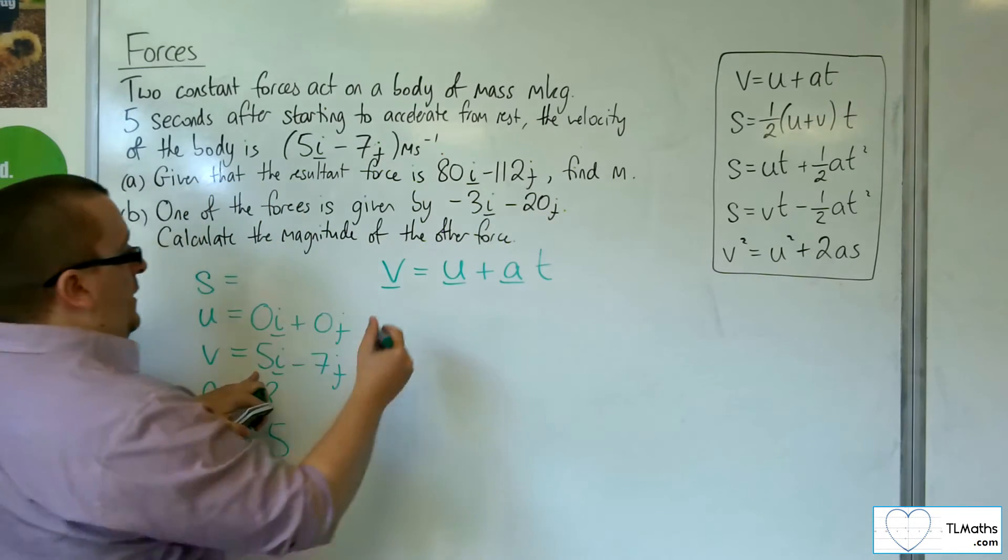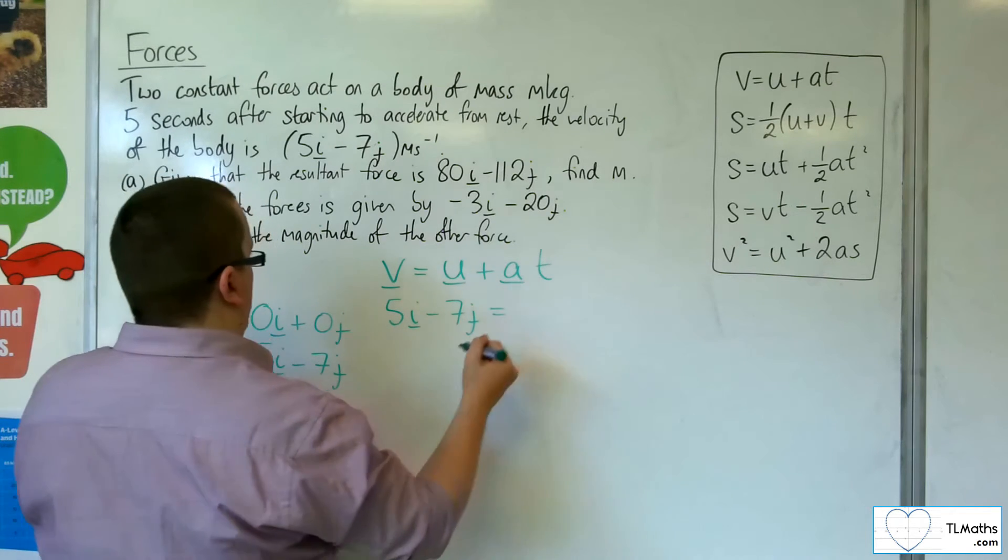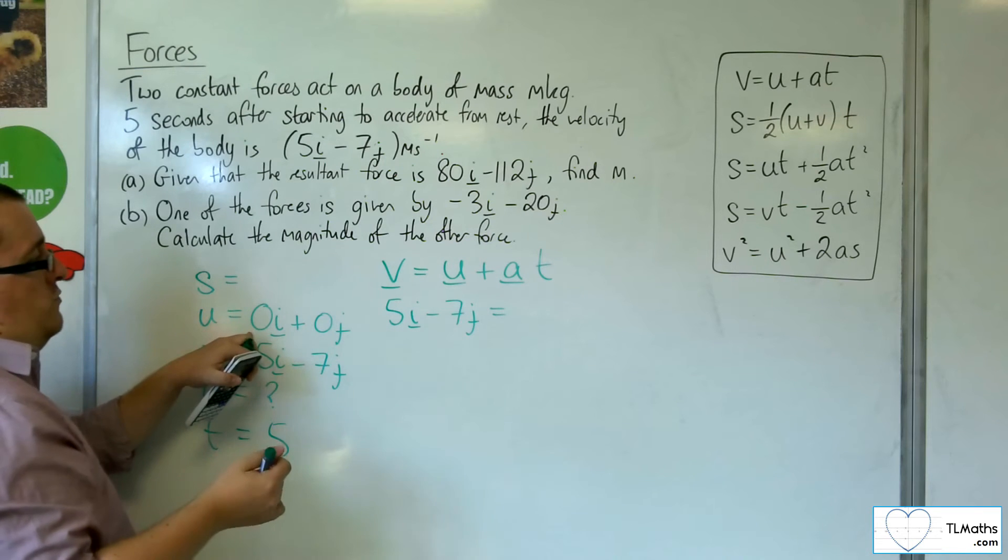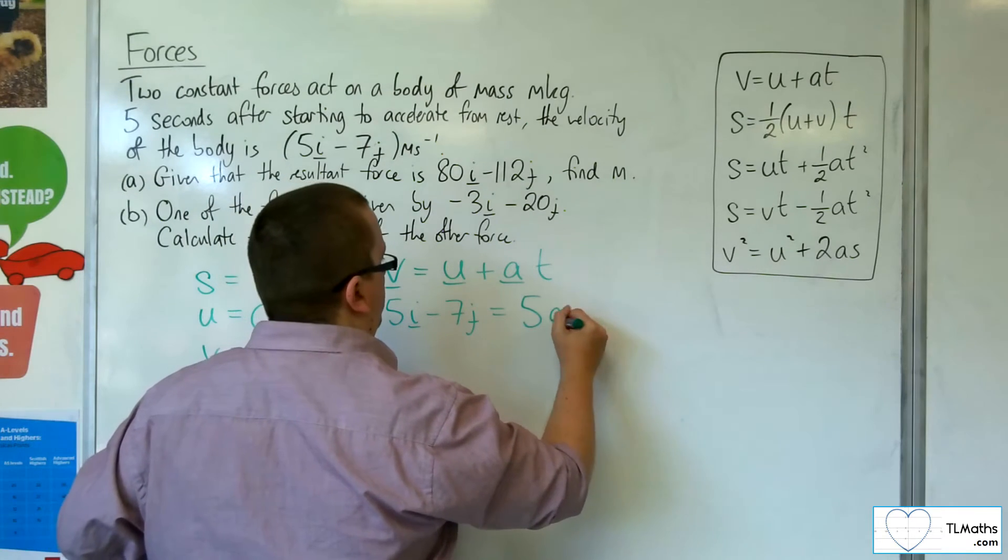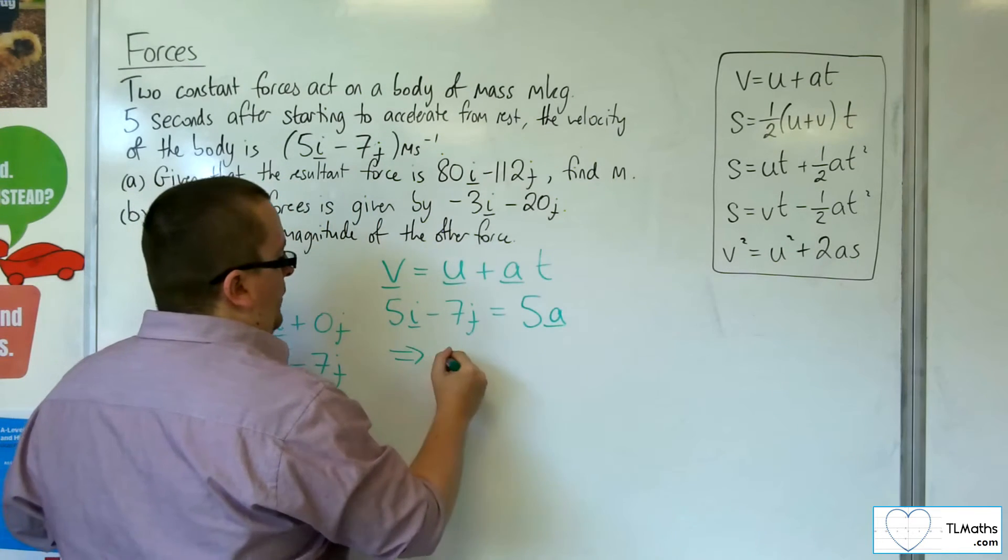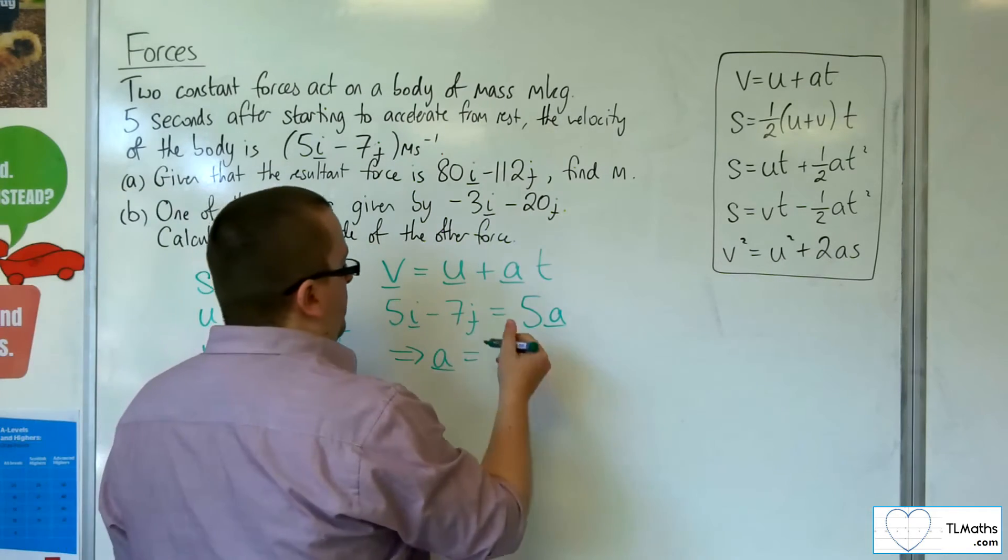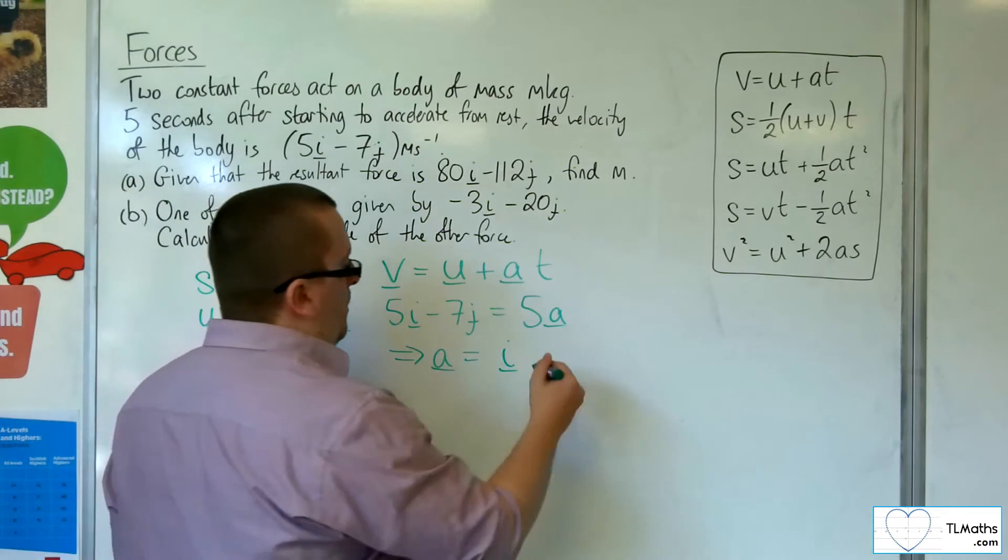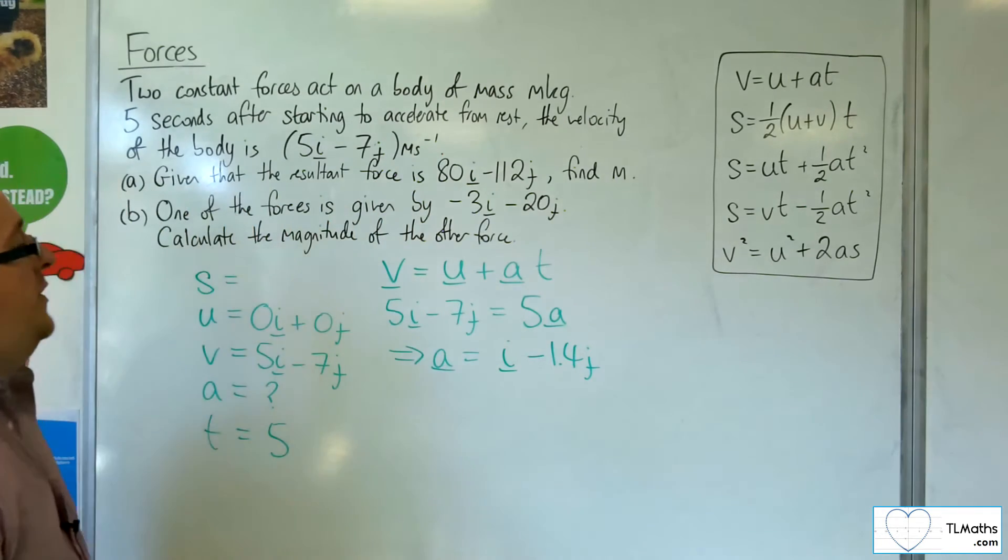So v is 5i minus 7j. u is 0i plus 0j, so I don't need to write that down. And we've got a times t, so 5a. If I divide both sides by 5, I can get the vector for a. So 5 divided by 5 is 1, and minus 7 divided by 5 is minus 1.4j. So there's my acceleration vector.